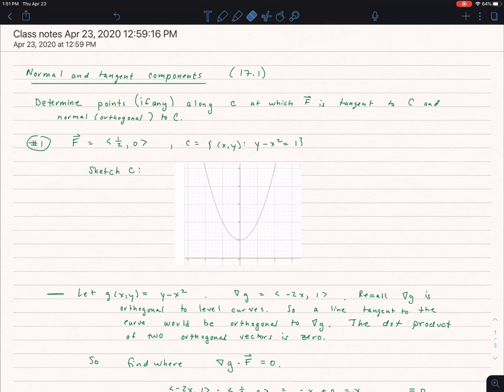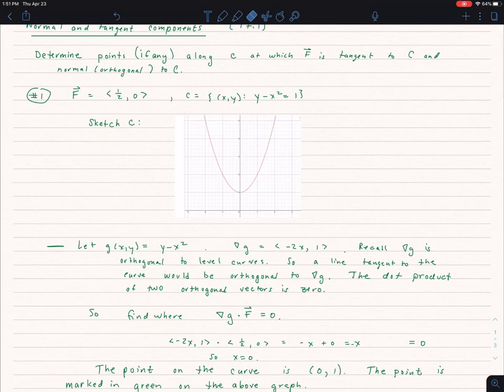So first of all to find if F is tangent to C at any point, well if you remember if we take our function G and I'm going to let G equal C, I'm going to let it equal that y minus x squared, then I take the gradient of that which is negative 2x comma 1. So that gradient if you remember is orthogonal to any point along that curve.